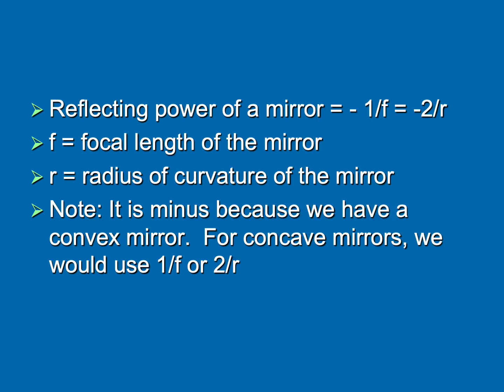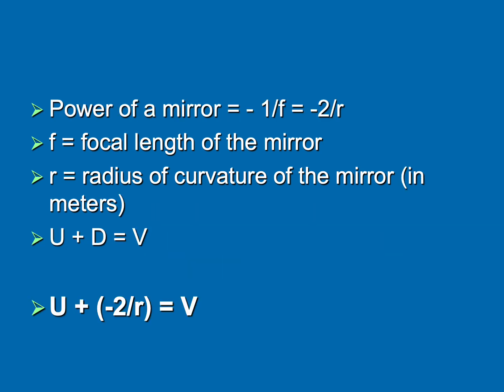In case you wanted something mathematical to hang on to with mirrors, here is a formula for the reflecting power of a mirror. It's one over the focal length or two over the radius of curvature. Because we're talking about convex mirrors right now, we're going to put a minus sign in front of that. When we talk about concave mirrors here in just a minute, we're going to drop that minus sign.